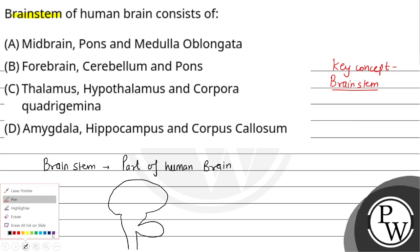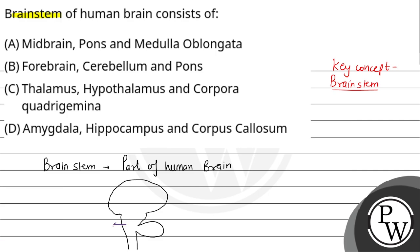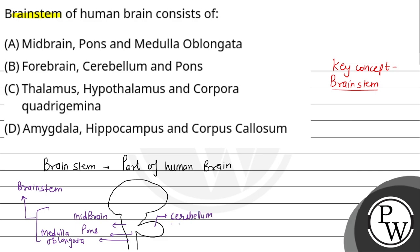If we talk about the human brain, the cerebellum is also part of the hindbrain, but the brainstem is a distinct part of the human brain. The brainstem is made up of the midbrain, pons and medulla oblongata.